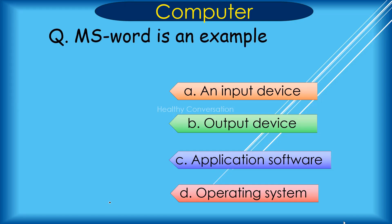Question: MS Word is an example of dash. A. An Input Device, B. Output Device, C. Application Software, D. Operating System. Correct answer is D. Operating System.